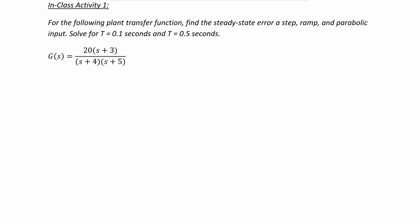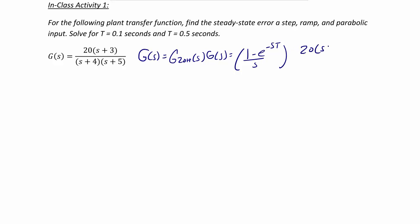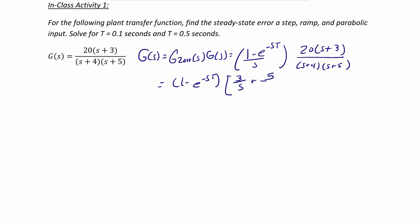Using the zero-order hold, G_ZOH(s) equals (1 minus e^(−sT))/s times 20(s plus 3) over (s plus 4)(s plus 5). This simplifies via partial fractions to (1 minus e^(−sT)) times [3/s plus 5/(s plus 4) minus 8/(s plus 5)].